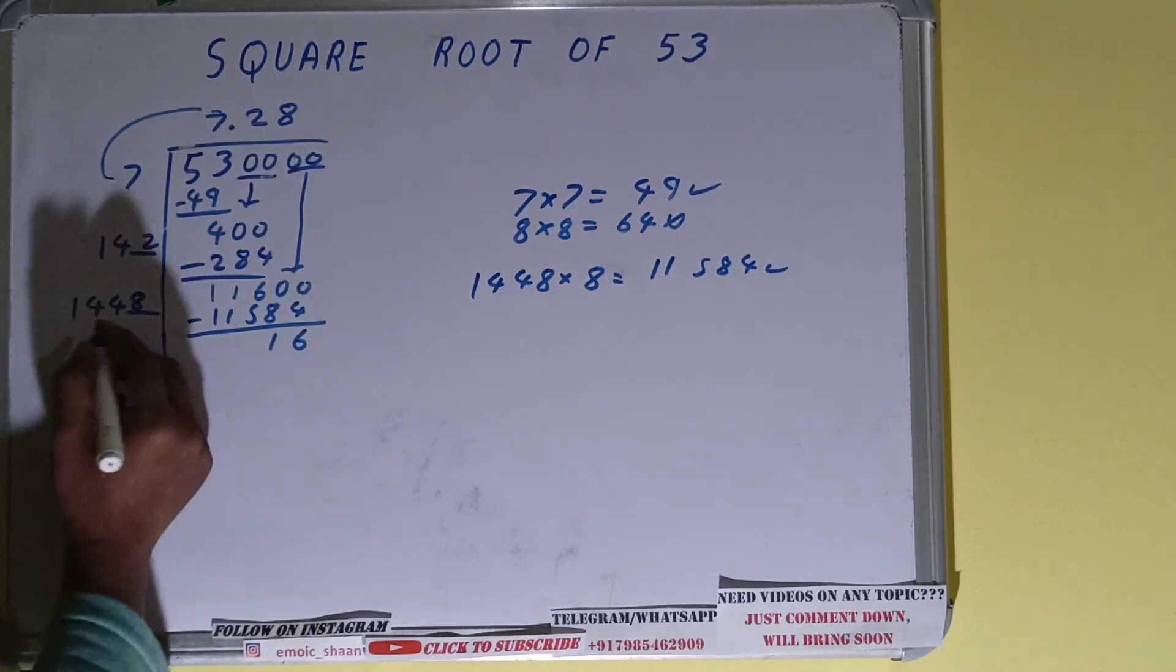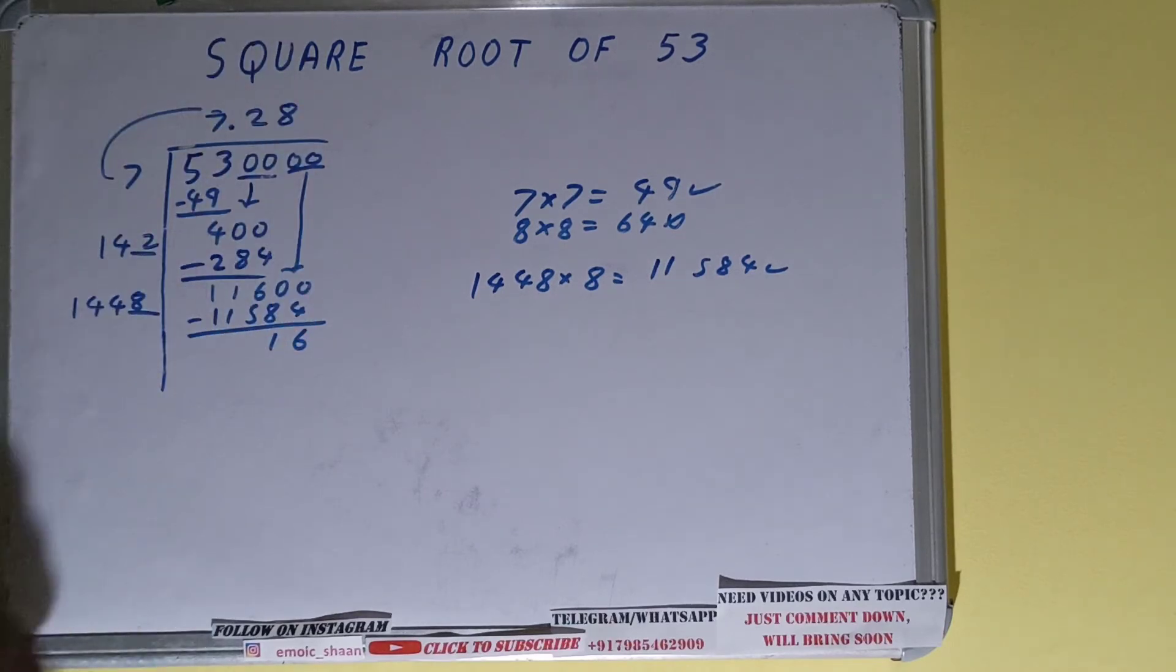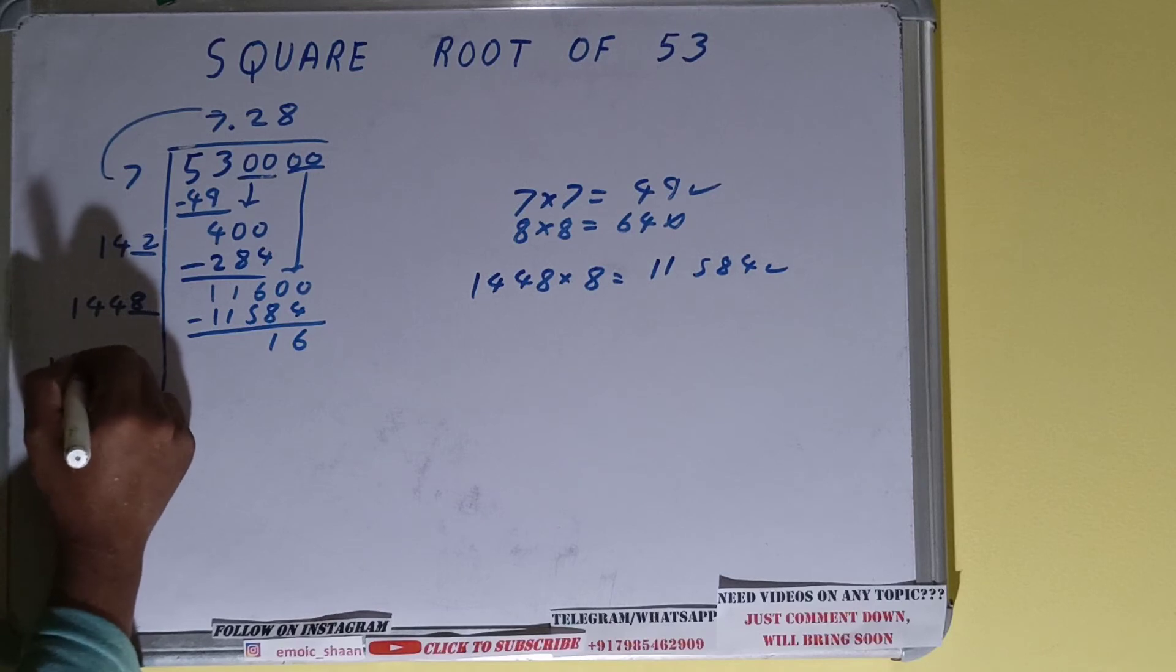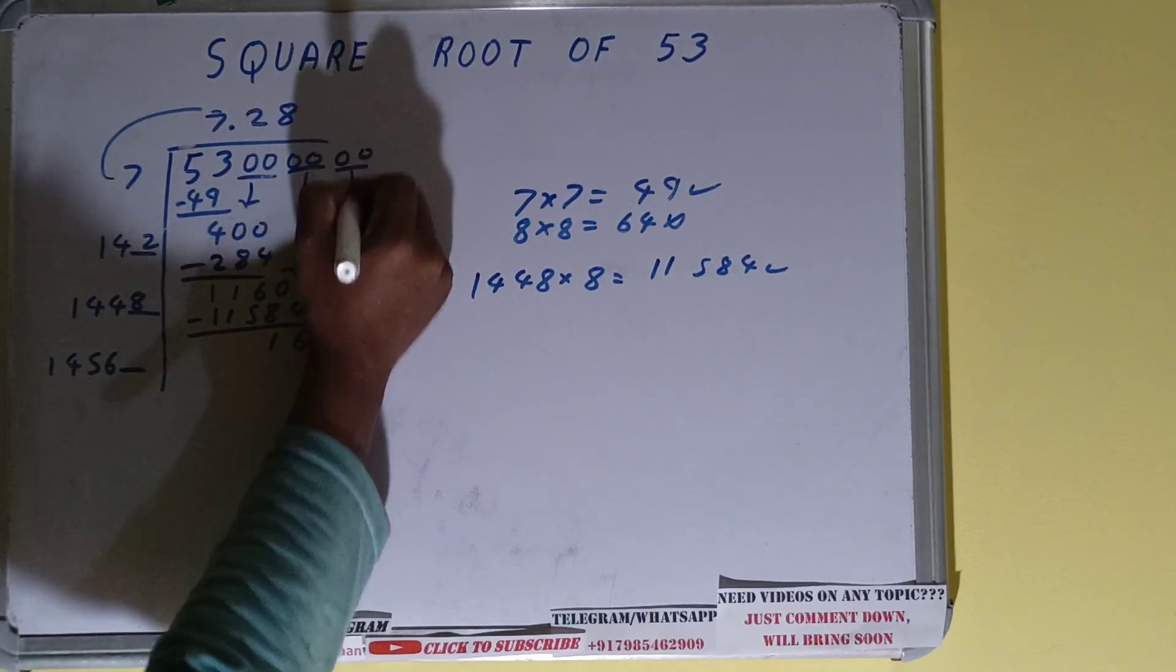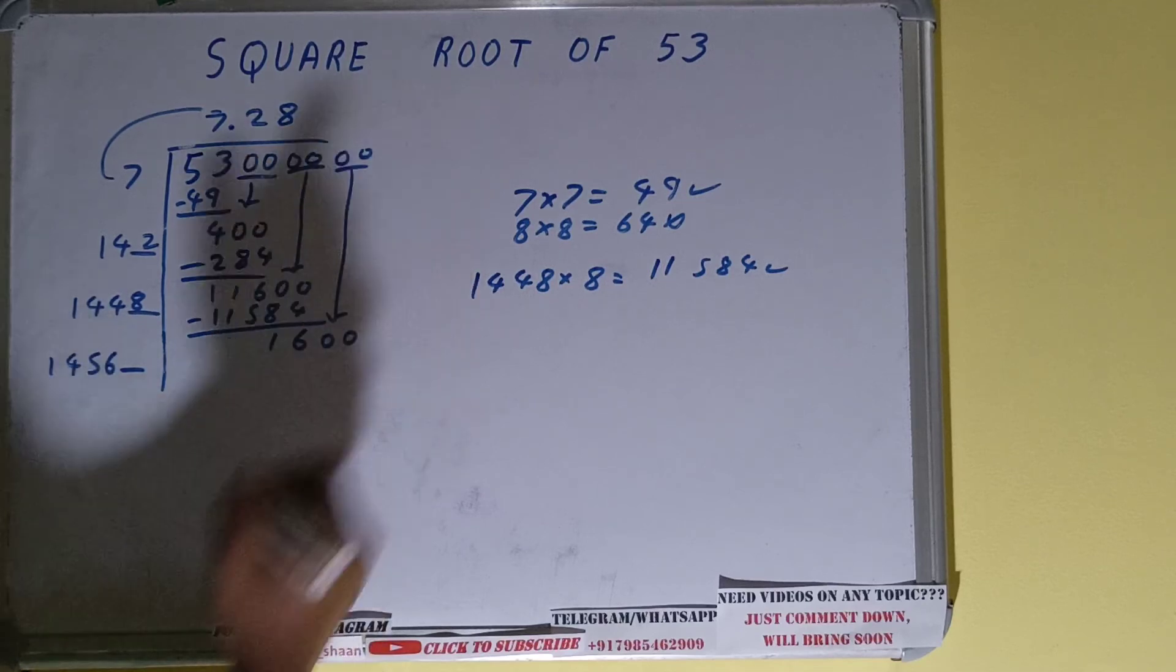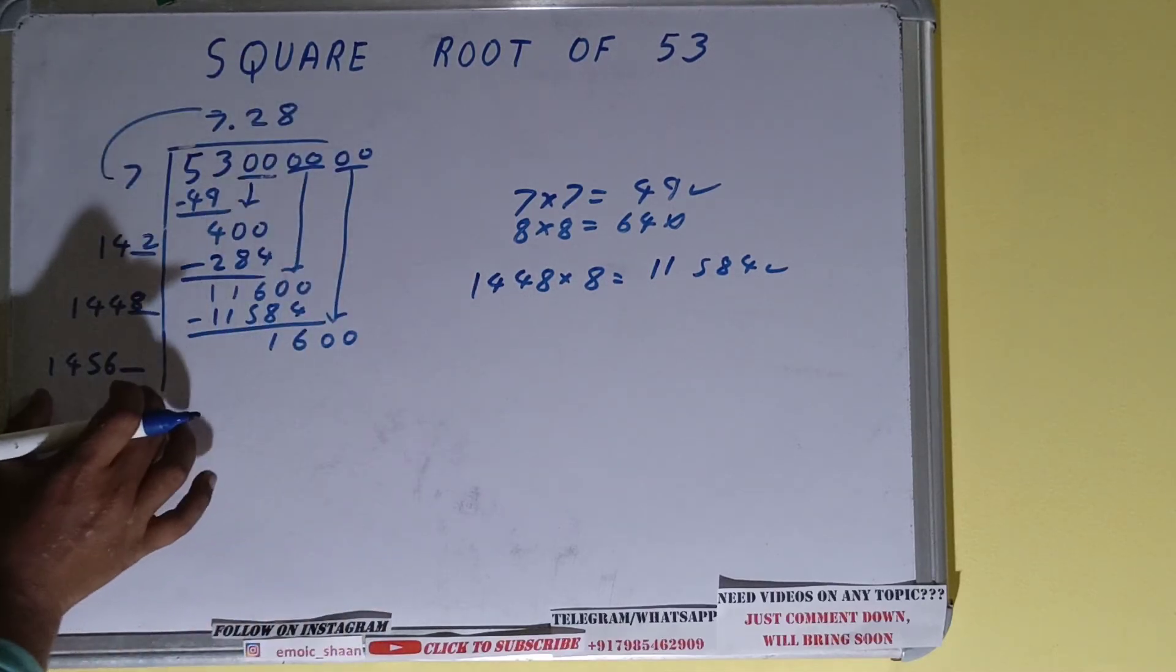Right, again now 1448 multiplied by 8 you did, right? So add both, so it will become as 1456, and one digit extra over here. Take one more pair of zeros down, and it will be 1,600.